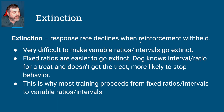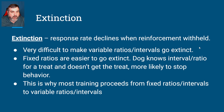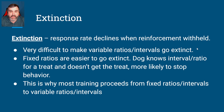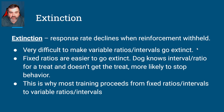Extinction is when the response rate declines because reinforcement gets withheld. It's very difficult to make variable rate behaviors go extinct because there's always the chance of a payout. This is where a lot of superstitions come from. For example, don't walk under ladders — you walk under one, don't realize it, and something bad happens that day, like a flat tire. It had to be the ladder. Or a black cat crossed your path, or someone broke a mirror, or you put on the wrong pair of socks.